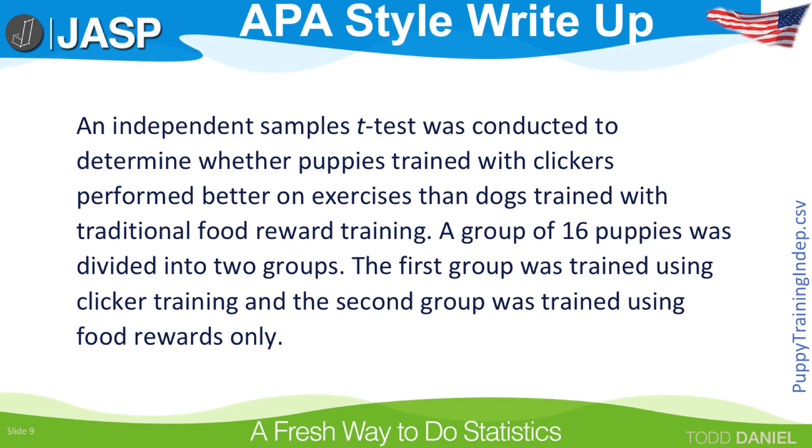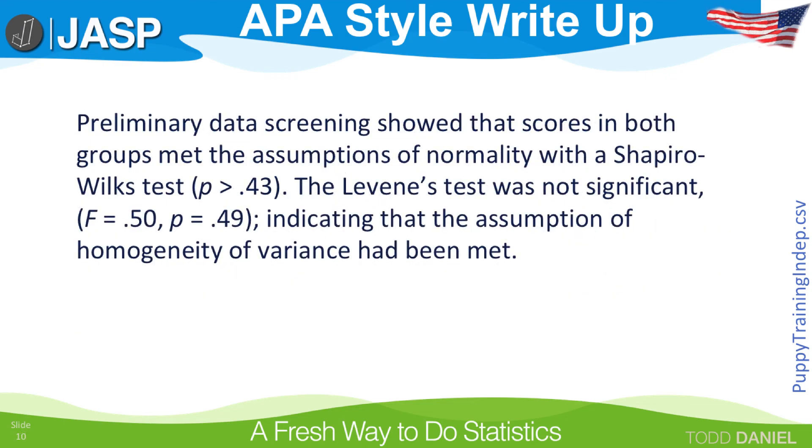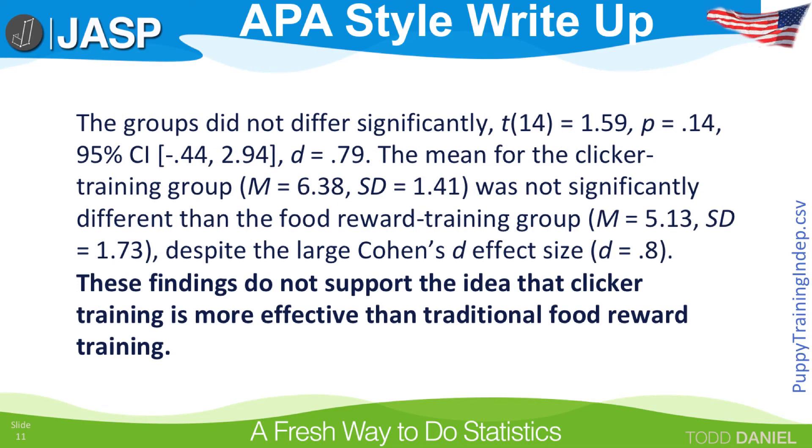And here is an example of how we would write up these results in APA style. First, I would describe my research design and how I conducted the experiment. Then, I would describe my assumptions checks, both for normality and homogeneity of variances. I have two values for the Shapiro-Wilk test, so I just reported the smallest value. All probabilities were larger than 0.43. Then, I would report the findings from my t-test, including the confidence interval and the effect size. I would also include the means and standard deviations for each group, and those come from the descriptive statistics. The last statement about the meaning of the findings would go in your discussion section if you are writing this up for a paper.